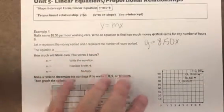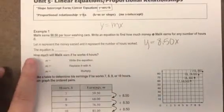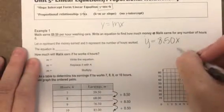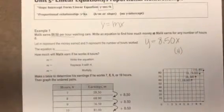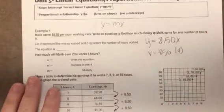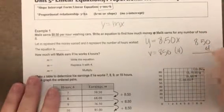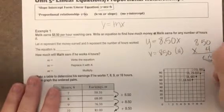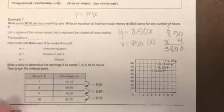So if this is the equation, how much would he earn in four hours? Well, we would substitute in times four. So we would say $8.50 times four, and if you do $8.50 times four, you get $34.